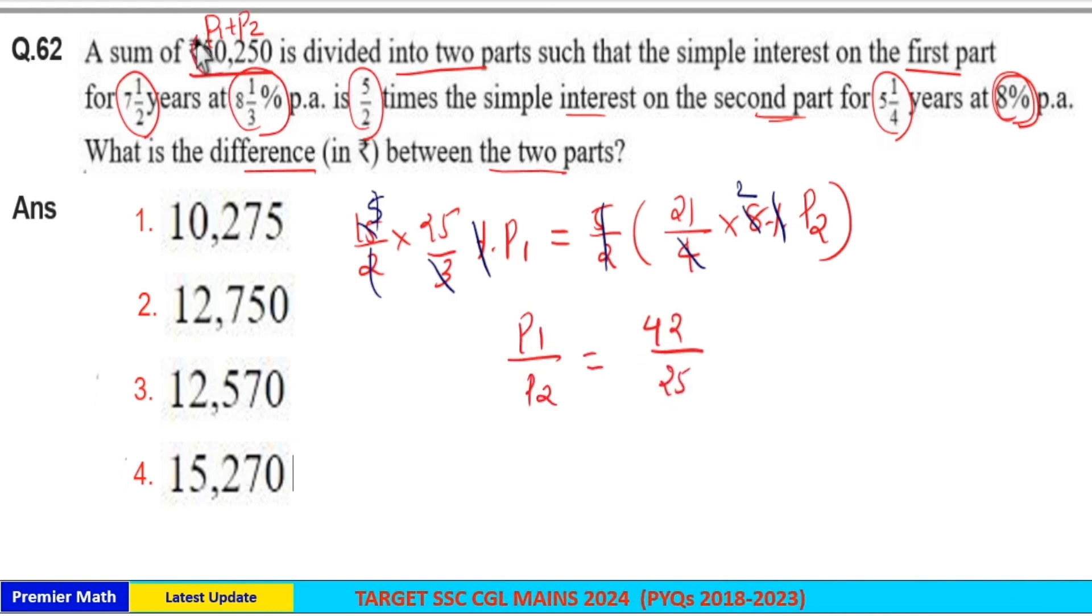The original sum is 50,250. In ratio, sum equals 42 plus 25, which is 67. So 67 parts, that is the sum of principals, equals 67 parts which is given as 50,250 in the question. Now 70